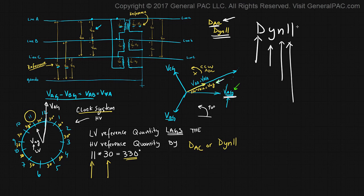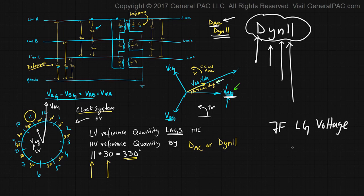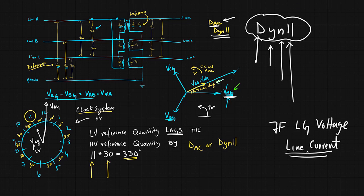That is how this method of describing a delta-Y transformer connection works. In Part 7f, we will use another reference quantity to describe the same exact principles — instead of using line-to-ground voltage quantities, we will use line current quantities to describe the phase relationship. This method using line currents is a lot more simple and makes a lot more sense. Thank you.